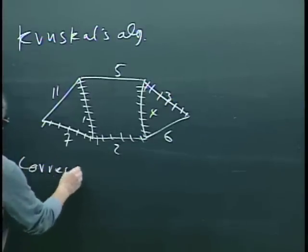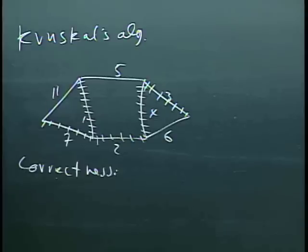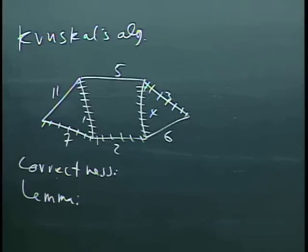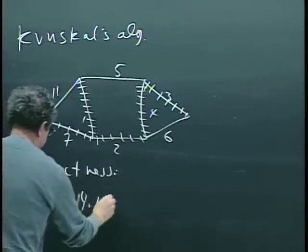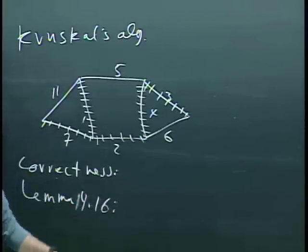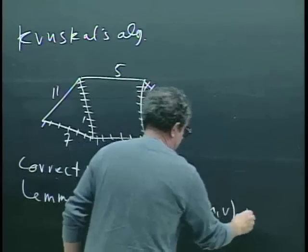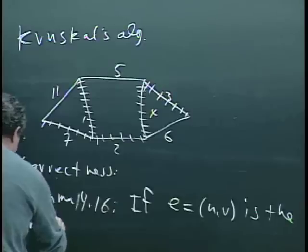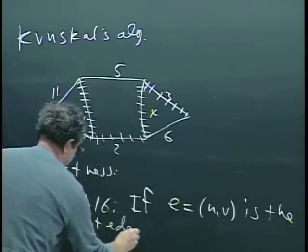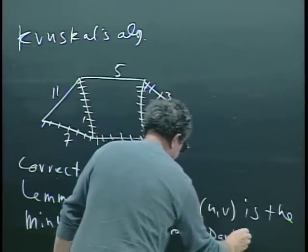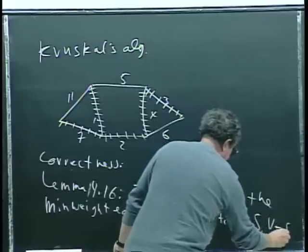So why is Kruskal's algorithm correct? Remember the main tool that we had for thinking about correctness — we proved this last week — was what I'm calling a lemma. The book doesn't label their statements; they just number them. I think it was 4.16. It was fairly long to write out, but it basically was this: if an edge uv is the minimum weight edge across a partition of the nodes, S and V minus S...